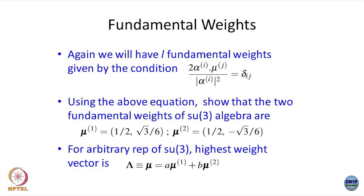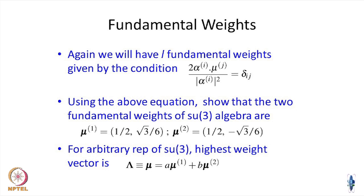First, there are L fundamental weights. To find the L fundamental weights, you take the dot product of the simple roots with some arbitrary vector, and that should satisfy an orthogonality condition. Using this and knowing the alphas, you can fix what the fundamental weights are. If there are L simple roots, there should be L fundamental weights, given by the expression involving the dot product between the simple roots and the fundamental weights.